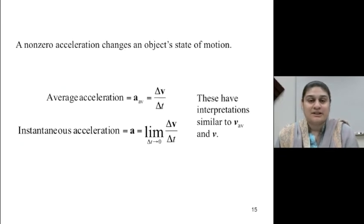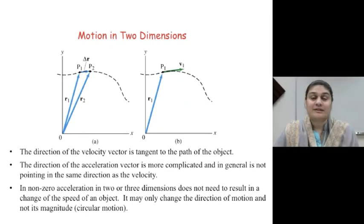So in a nutshell, average acceleration is given by delta v over delta t, and instantaneous acceleration is given by delta v over delta t, in the limit where delta t approaches a very, very small number, almost equals to zero. So what have we learned so far?